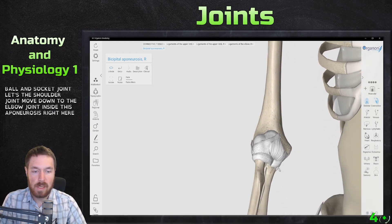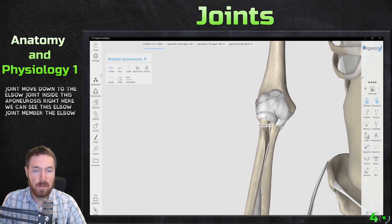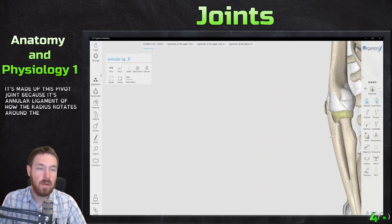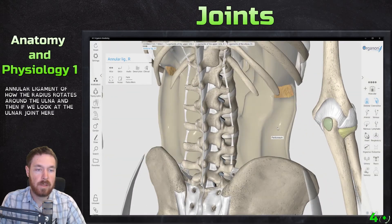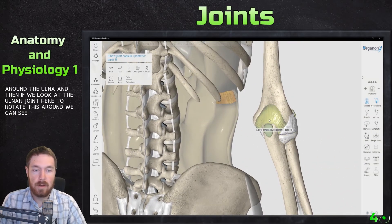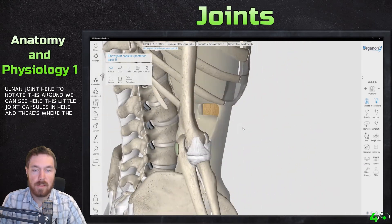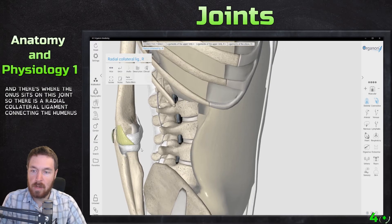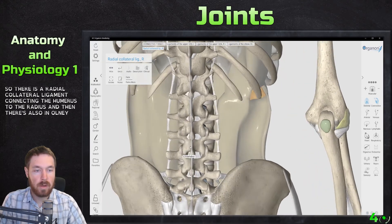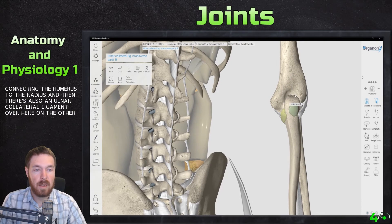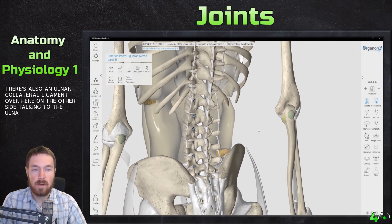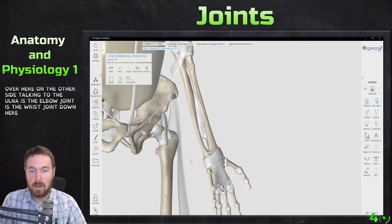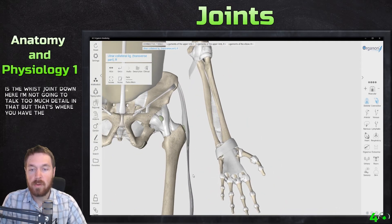Moving down to the elbow joint — inside the aponeurosis — we can see this is a pivot joint because of the annular ligament, which allows the radius to rotate around the ulna. Looking at the ulnar side, we can see the joint capsule where the ulna sits. There's a radial collateral ligament connecting the humerus to the radius, and an ulnar collateral ligament on the other side attaching to the ulna. Below that is the wrist joint, where the carpals form sliding joints.